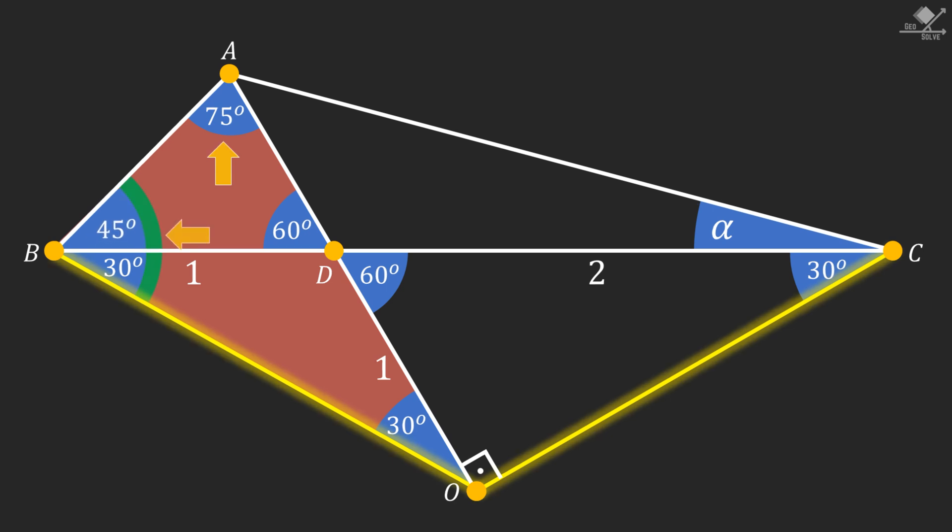Notice that the sum of these two angles is also 75 degrees. And that makes the shaded triangle also an isosceles triangle, and its corresponding sides must be congruent.